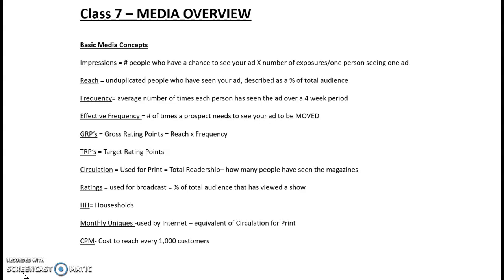Typically reach, which is a percentage — you ignore the percentage sign and just take the number. So if your reach is 80%, you just take 80. Forget the percent. And if your frequency is three, 80 times three is how many GRPs? 240! I know you've got it.